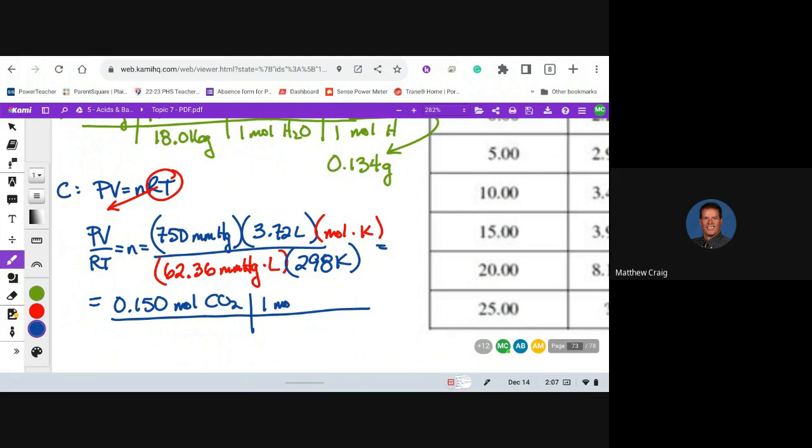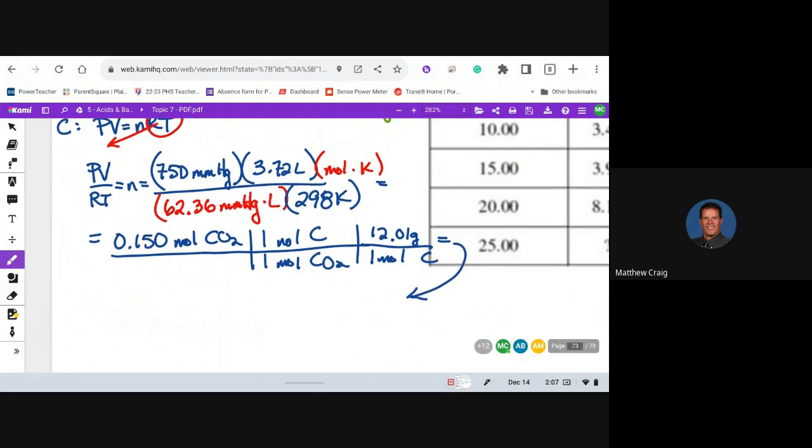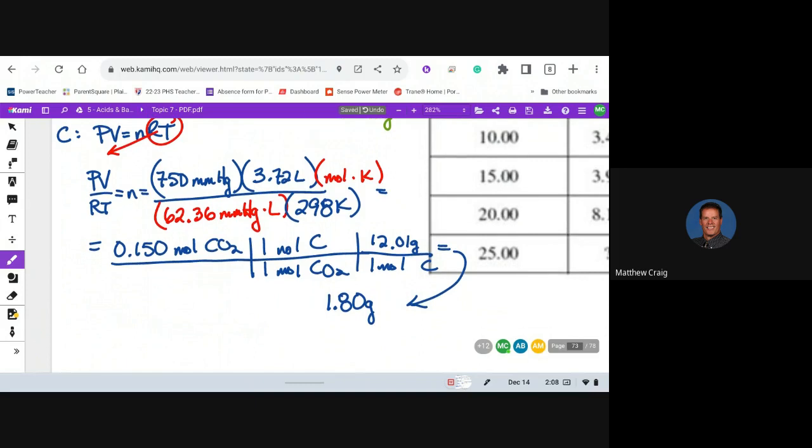So 750 times 3.72 divided by 62.36 times 298 equals 0.150 ish. So then let's do the same thing. In one mole of carbon dioxide, that's 44.01, and we have one mole of carbon. One mole of carbon is 12.01, so 1.80 grams of carbon.